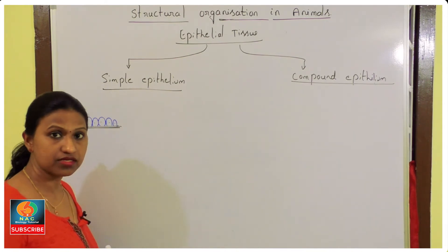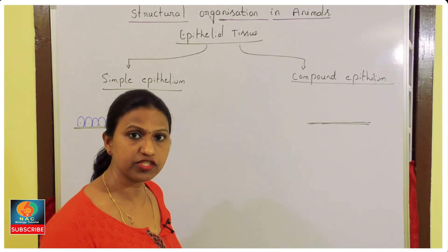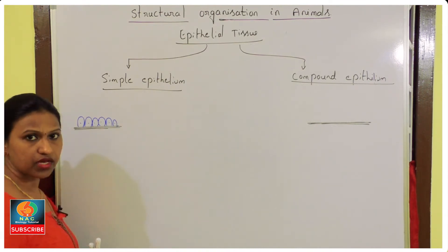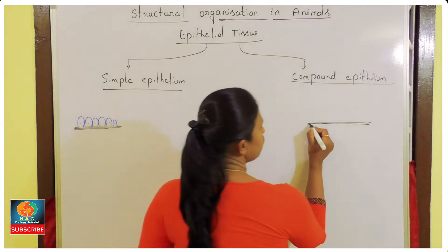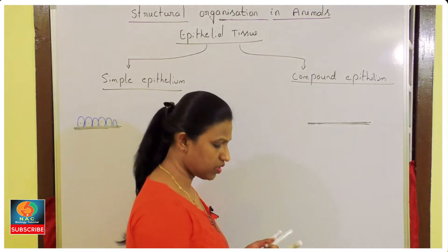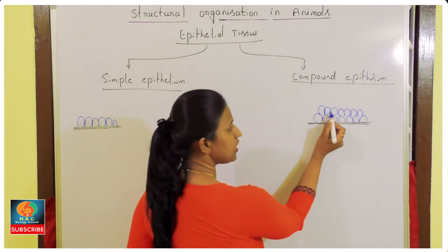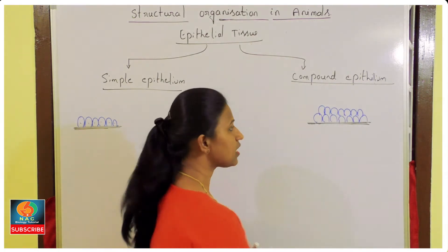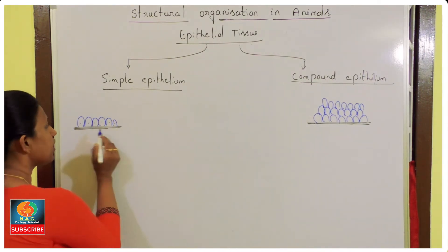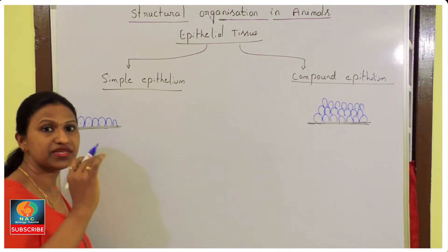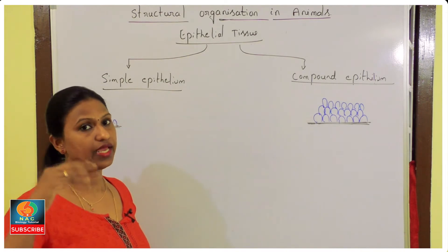In compound epithelium, the same epithelial cells are present in multiple layers — one layer attached to the basement membrane and additional layers above not touching the basement membrane. In simple epithelium, each and every cell must touch the basement membrane. Within simple epithelium, based on the shape of the cell, we can classify into different types.